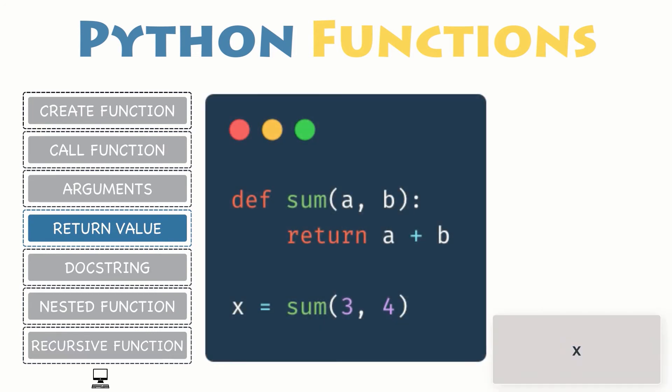In this example, the function sum will return the sum of two variables, and store its value into a variable outside the function, so it can be used later on.